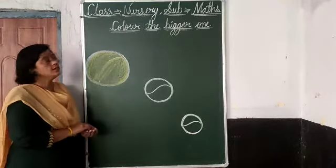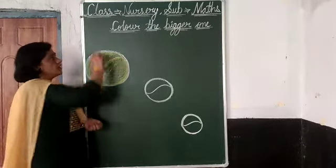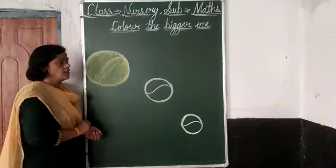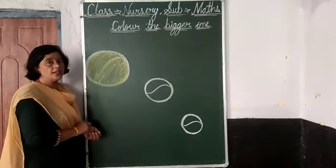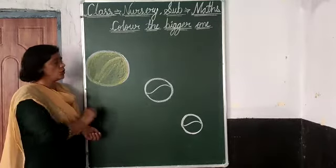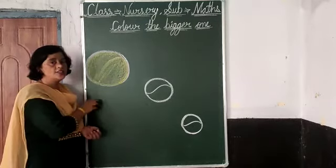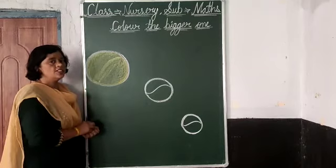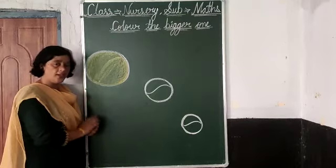Now repeat again. Copy — color the big ball. You can draw. Draw three balls and we will color the big ball.